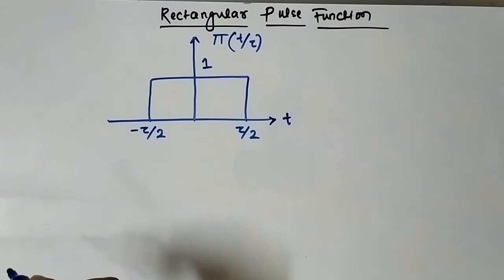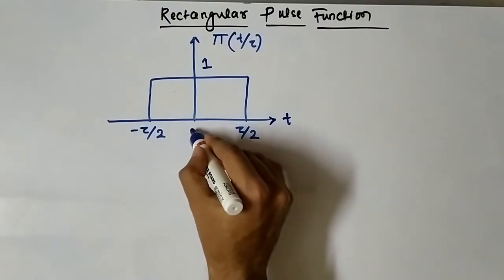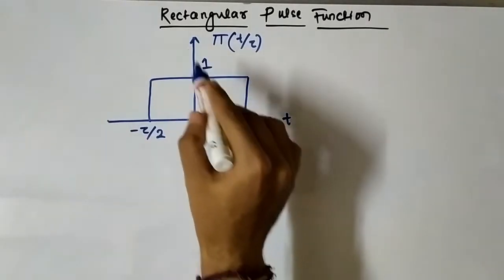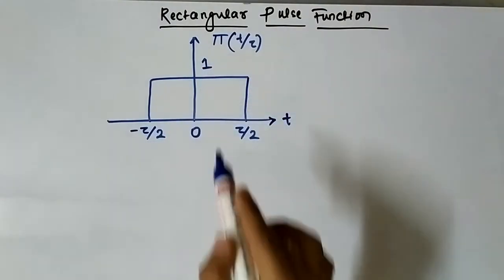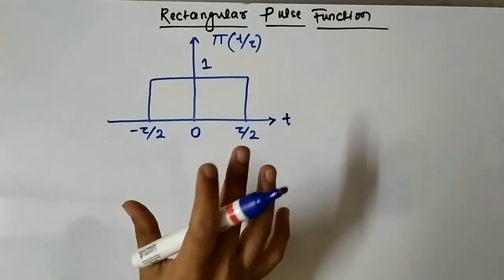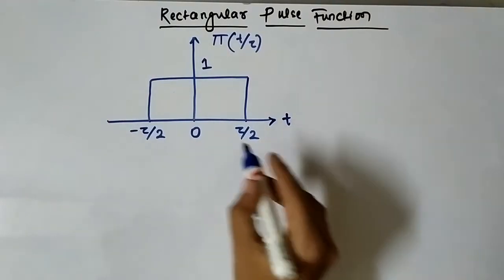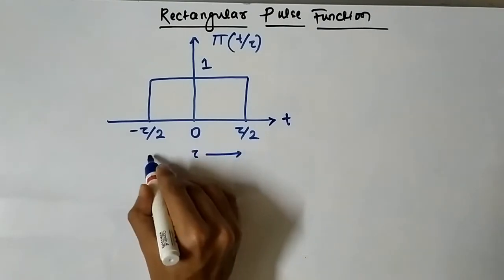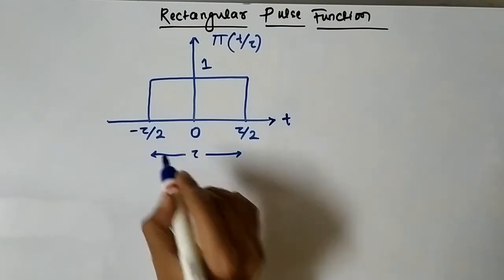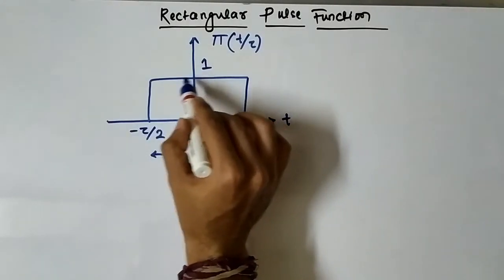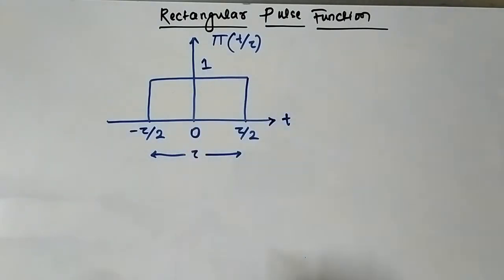The rectangular pulse function is an even function because it is symmetric about the y-axis. It has a total width of tau, and from minus tau by 2 to tau by 2, the amplitude is constant and equal to 1.